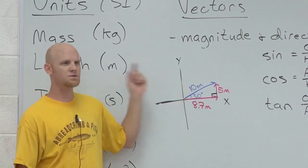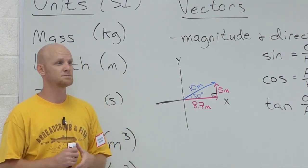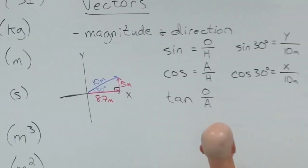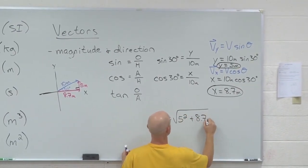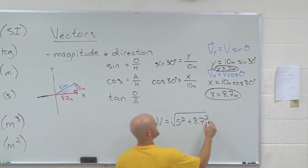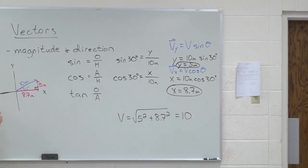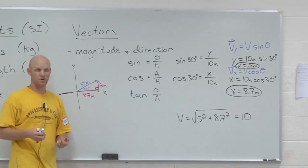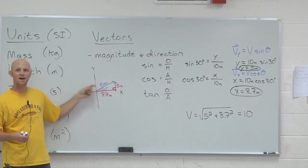How would you find the magnitude — how would you find out it really was 10 meters? The Pythagorean theorem. Our vector would equal the square root of 5 squared plus 8.7 squared, and in the end we get 10. It's just the Pythagorean theorem — we've got both legs of the right triangle and need the hypotenuse. Square them, add them together, and take the square root: a² + b² = c².